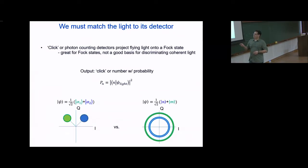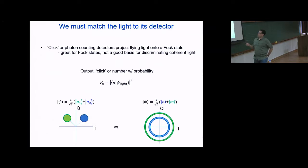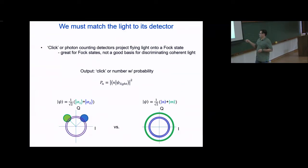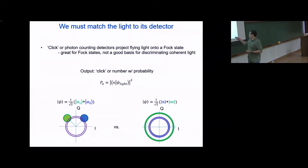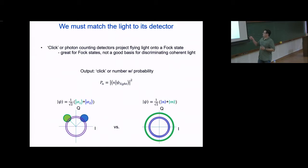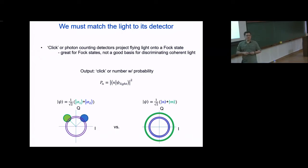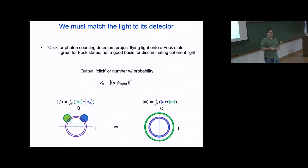If I have a superposition of two coherent states — (1/√2)(|α₁⟩ + |α₂⟩) — versus a superposition of two Fock states, this detector handles them very differently. For the Fock state superposition, a particular detector state |n⟩ nicely overlaps with |n⟩ and is orthogonal to |m⟩, so it rapidly tells you the probability of each Fock component. For coherent states with the same radius, the overlaps are similar, so the detector can't discriminate which coherent state you're in.